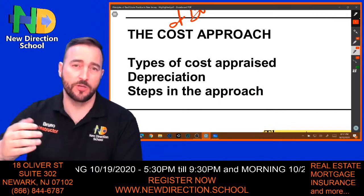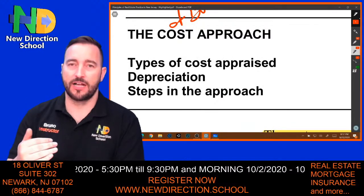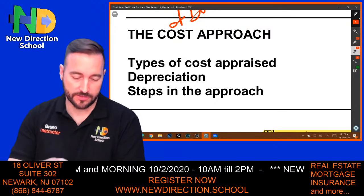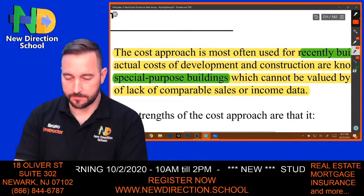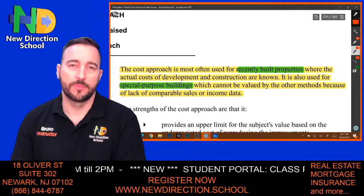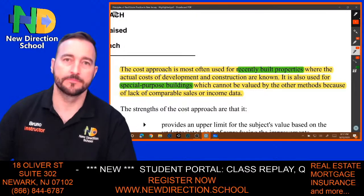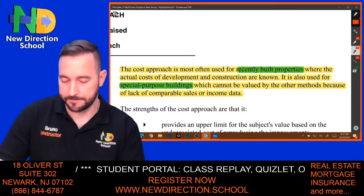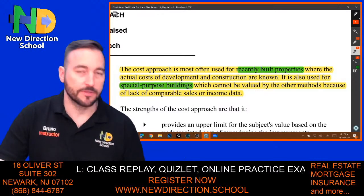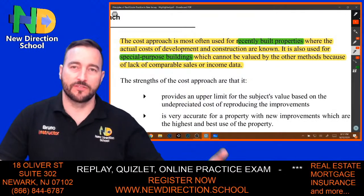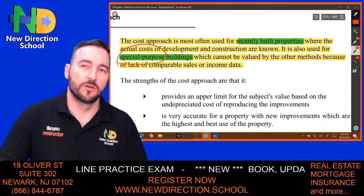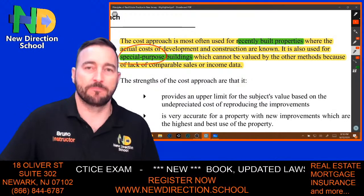There are different types of cost approach that can be used. We also have to consider the appraised value minus depreciation value in order to get to the actual estimate for the appraisal. The cost approach is most often used for recently built properties, because the actual cost of development and construction are known. It's also used for special purpose buildings which cannot be valued by other methods because there are no comparable sales or they don't generate income.